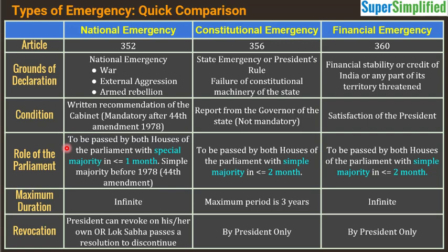For constitutional emergency or President's Rule, it also needs to be passed by both houses of Parliament, but with a simple majority. This is where tricky exam questions are framed: national emergency requires special majority, but constitutional emergency requires simple majority. Similarly, financial emergency also requires simple majority. Regarding duration, for national emergency approval must come within one month, but for constitutional emergency and financial emergency it is within two months.